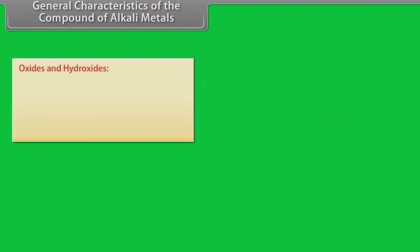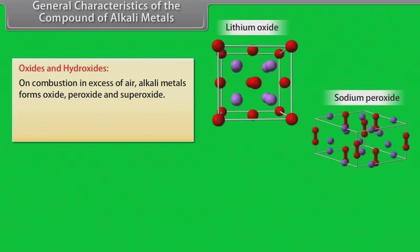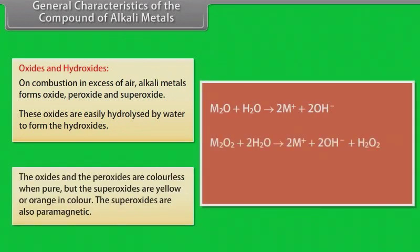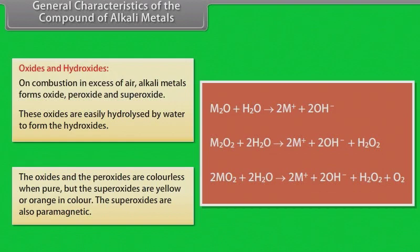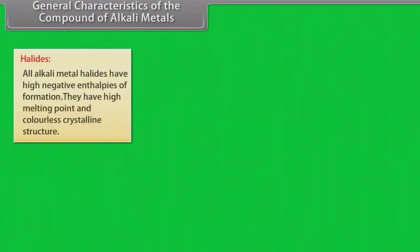General characteristics of the compound of alkali metals. Oxides and hydroxides. On combustion in excess of air, alkali metals form oxides, peroxide and superoxide. These oxides are easily hydrolyzed by water to form the hydroxides. The oxides and peroxides are colorless when pure, but the superoxides are yellow or orange in color. The superoxides are also paramagnetic.